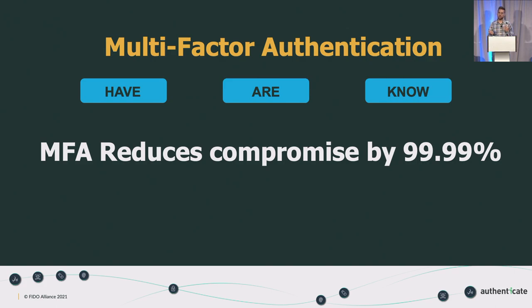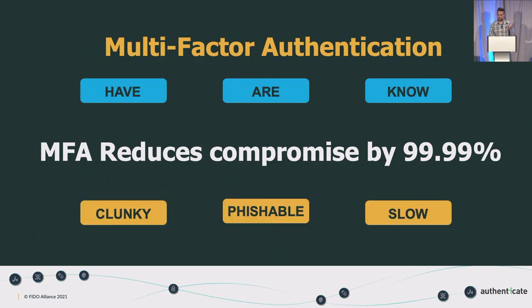Traditional or legacy MFA is still not unphishable. SMS and email-based second factors can both be compromised: email if it's just protected by a password, and SMS through SIM swapping — where someone calls the mobile carrier and asks them to send the confirmation code to another phone. So while MFA is successful and covers something you have, something you are, and something you know, it's also clunky, phishable, and can be slow.